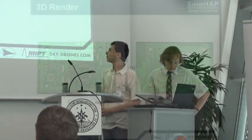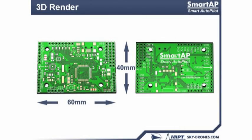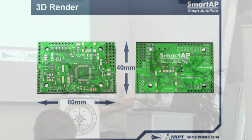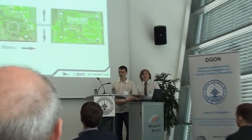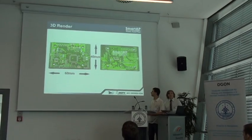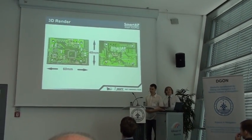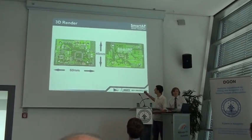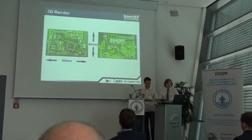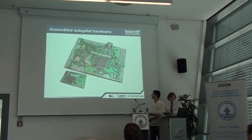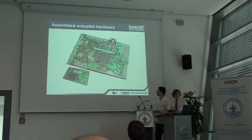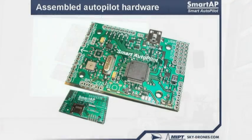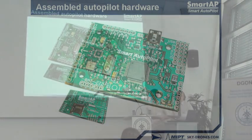Here is the final 3D render of the hardware. The board size is 60 by 40 millimeters. At this point in the project we also realized it didn't have a name, and we wanted a recognizable symbol for our project, so we decided to name it SmartApp — also known as Smart Autopilot. This is how the board looks after assembly, top view and bottom view respectively. Unfortunately one IC was missing due to a short delay in component delivery, but now everything is fine.